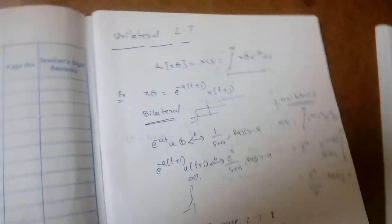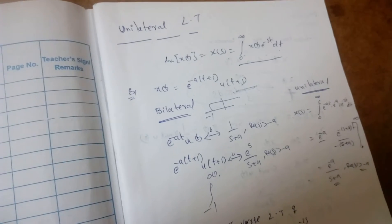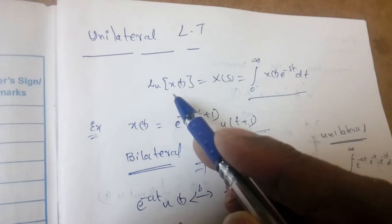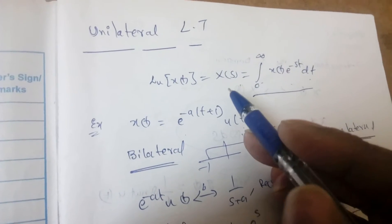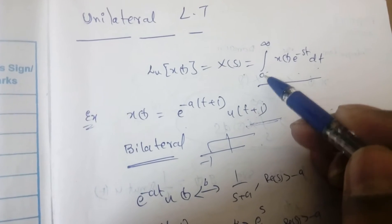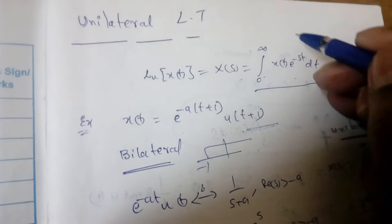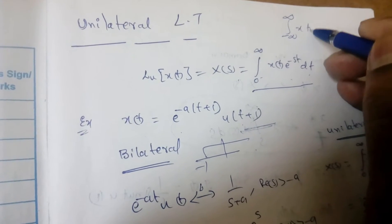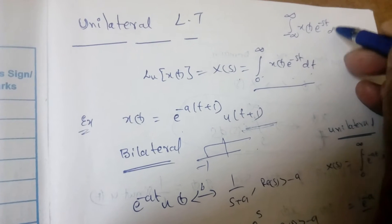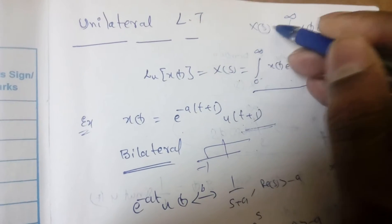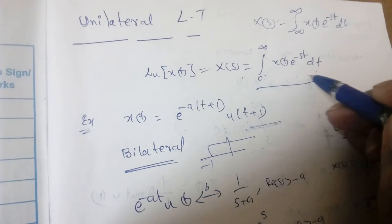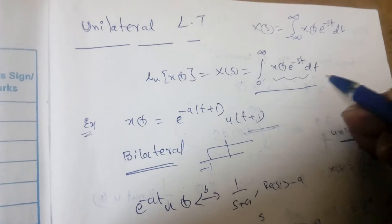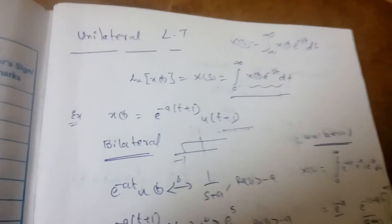In this lecture, I am going to discuss about the unilateral Laplace transform, the continuation of the Laplace transform. The unilateral transform X(s) is defined as the integral from 0 to infinity. If you see the bilateral transform, it is from minus infinity to infinity of x(t) into e power minus st dt. But the unilateral will start from 0 to infinity, integrating x(t) into e power minus st dt.